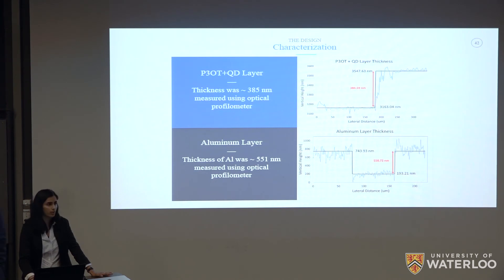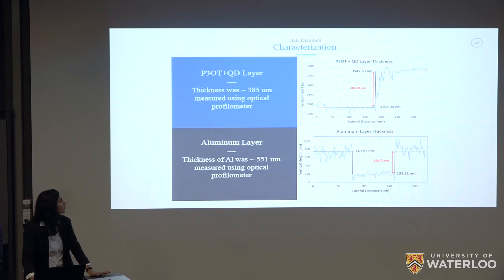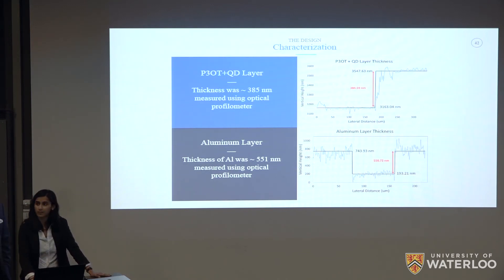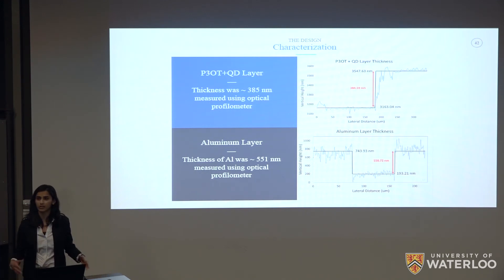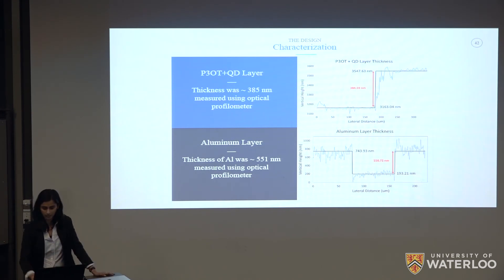We characterized our polymer quantum dot film and aluminum layer using an optical profilometer to measure thickness and surface roughness. The polymer thickness was approximately 385 nanometers and the aluminum was 550 nanometers. This was done to correlate back to our fabrication parameters and determine how to fine-tune them for future second-generation devices.